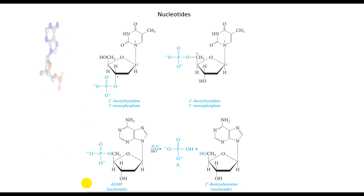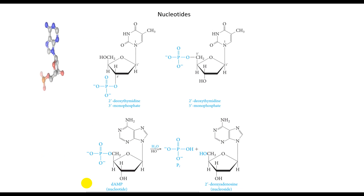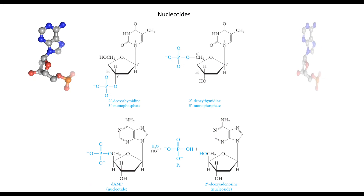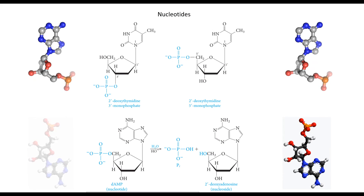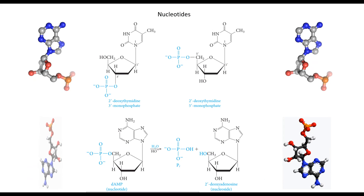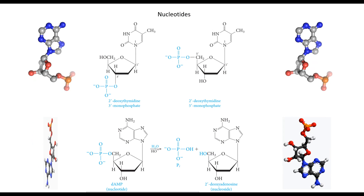Nucleotides are phosphate esters of nucleosides. A hydroxyl group in the sugar part of a nucleoside is esterified with phosphoric acid. In DNA, nucleotides have the 5' or 3' hydroxyl group of deoxyribose esterified.